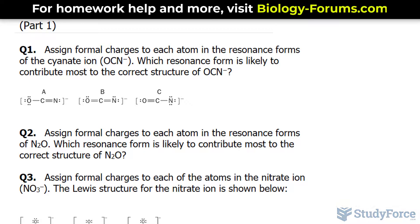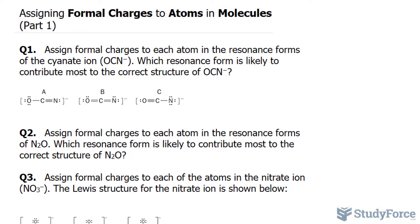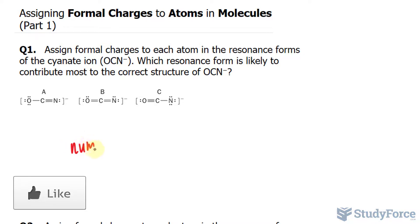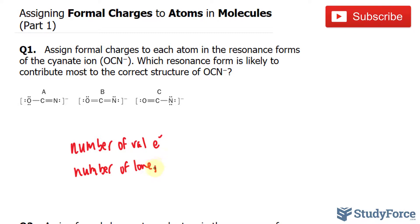To organize my work here, I want to begin by creating a table. In our table, I'll be analyzing the number of valence electrons, the number of lone pair electrons, and half the number of bonding electrons. In our first row, we'll have the number of valence. In our second row, we'll have the number of lone pair electrons.